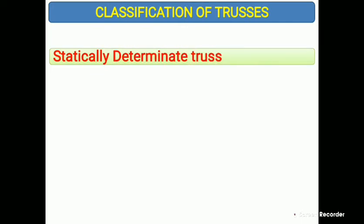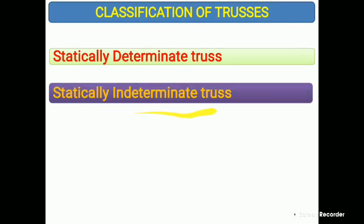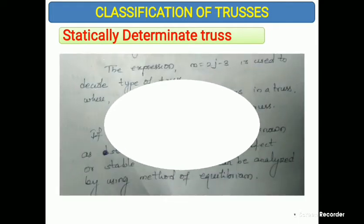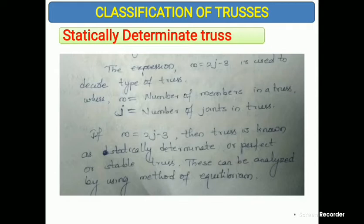Classification of trusses: trusses are basically classified into two types — first, statically determinate truss, and second, statically indeterminate truss. The expression m = 2j − 3 is used to decide which type a truss belongs to, where m is the number of members and j is the number of joints.